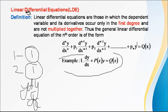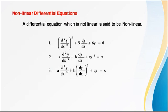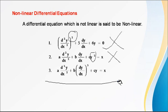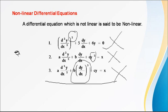If any differential equation does not satisfy these conditions, it is called a nonlinear differential equation. For example, if the degree of the differential equation is 2, it is not a linear differential equation. Similarly, if the exponent of the dependent variable is 2, it is also not a linear differential equation. In another example, if the degree of one term is 3, it is also not a linear differential equation. All of these are called nonlinear differential equations.